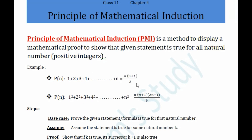In principle of mathematical induction, you will be given statements which are actually formulas — for example, the formula to find the sum of n natural numbers, or the formula to find the sum of squares of natural numbers. These formulas are already valid for all natural numbers, but what we do here is show a legitimate proof to prove that the given statement or formula is true.